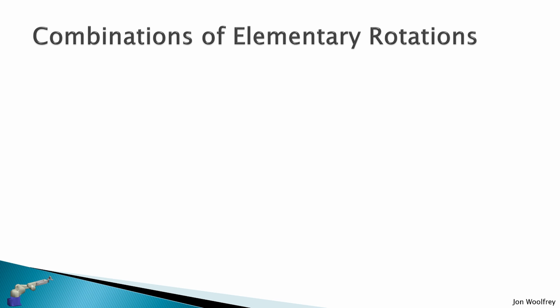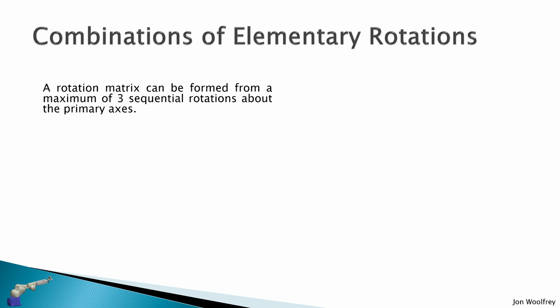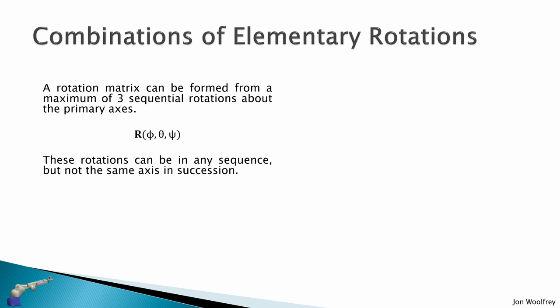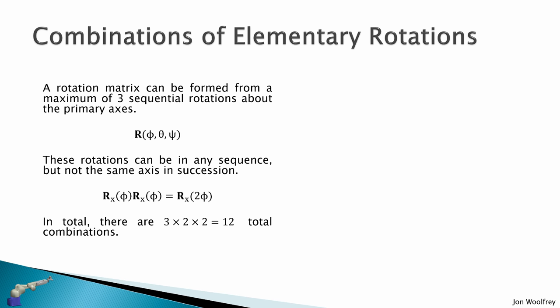We can make combinations of these elementary rotations. A rotation matrix can be formed from a maximum of three sequential rotations about the primary axes — that is, R as a function of phi, theta, and psi. These rotations can be in any sequence, but not about the same axis in succession, because rotating about X twice is just 2*phi, which is redundant. In total there are 3×2×2 = 12 combinations of these rotations.